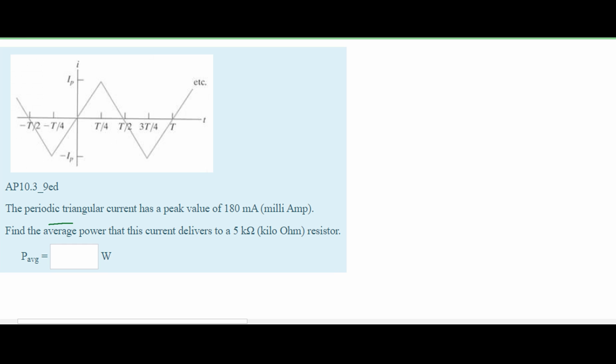We're asked to find the average power that this current delivers to a 5 kilohm resistor. We know we are given two things: current and resistance. When we look for our P average formula in the notes linked below, we need to look for a formula that contains all of these.